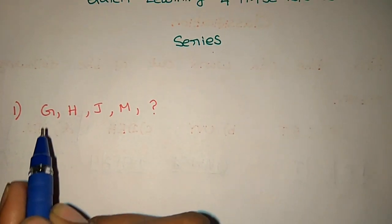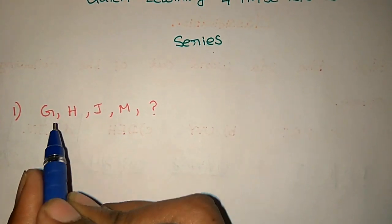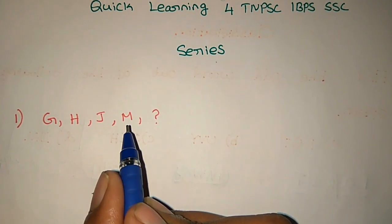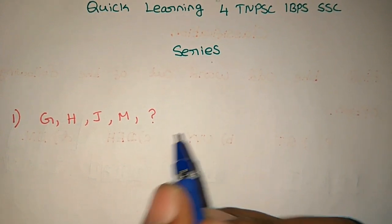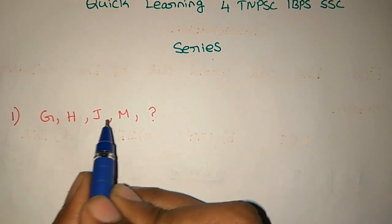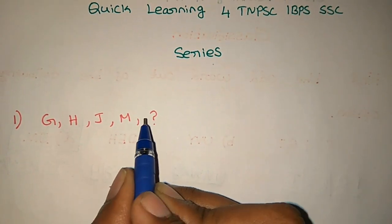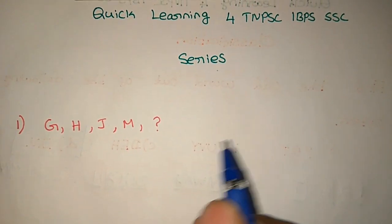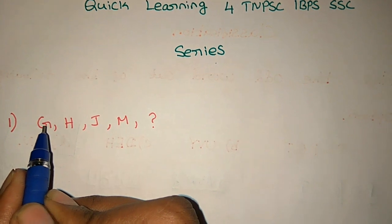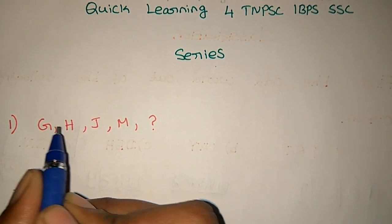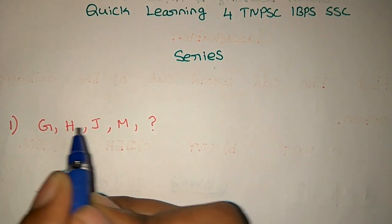Let's take a series: G, H, J, M. Let's take R and A. First, if you add G, then you add H. G equals H.